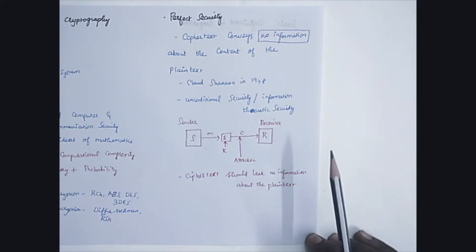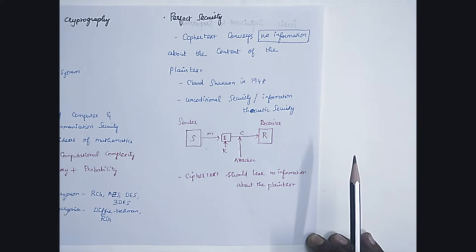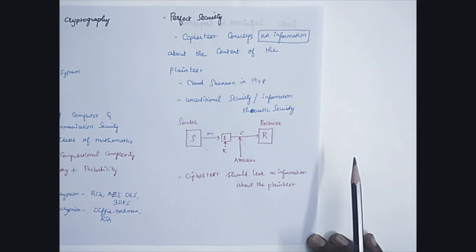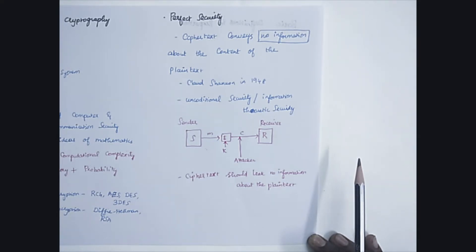First is Perfect Security. It is defined as: the cipher text shouldn't convey any additional information about the plain text. It was introduced by Claude Shannon in 1948, and is otherwise known as unconditional security or information theoretic security.